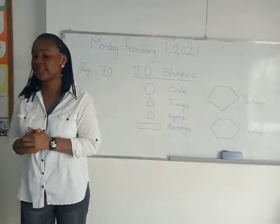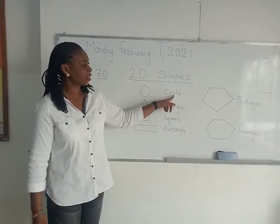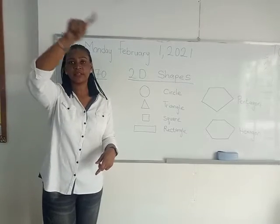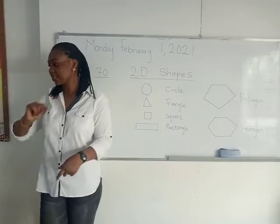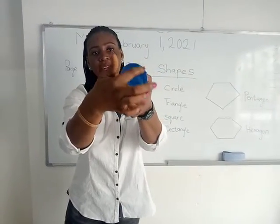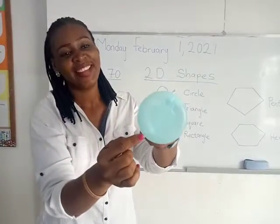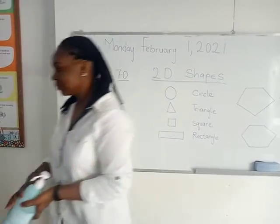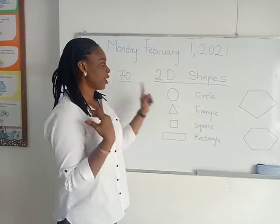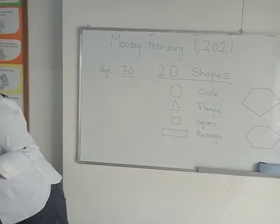So let's identify the different shapes. The first shape on the board is the circle — everyone say circle. You can take a finger and draw a circle; it's round. This is a circle. Now look around at home and try to find objects that have the shape of a circle.